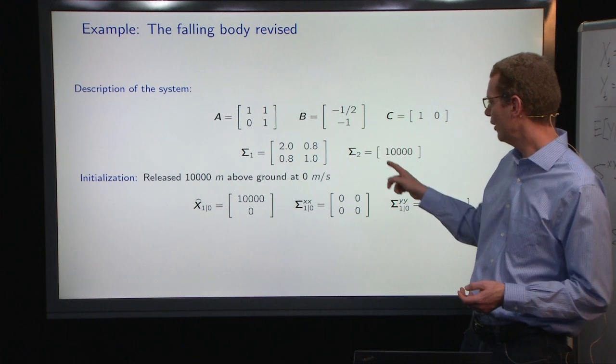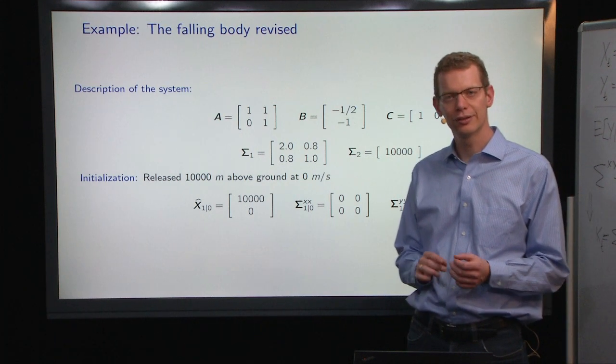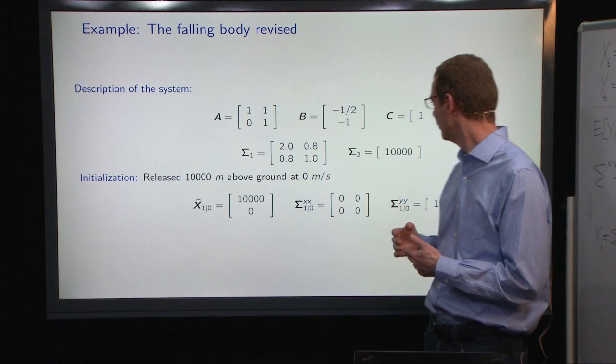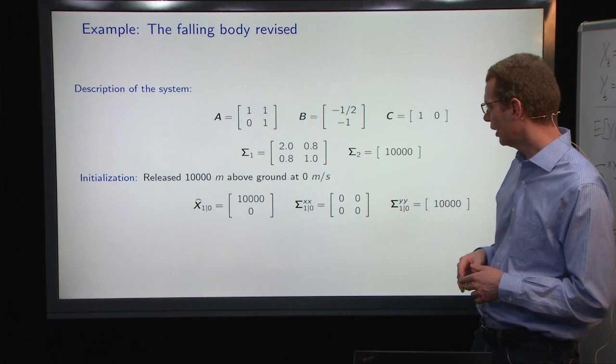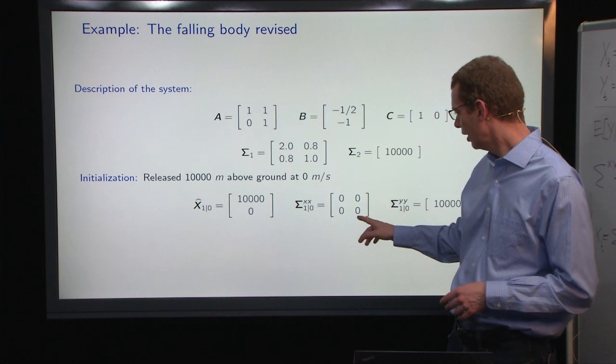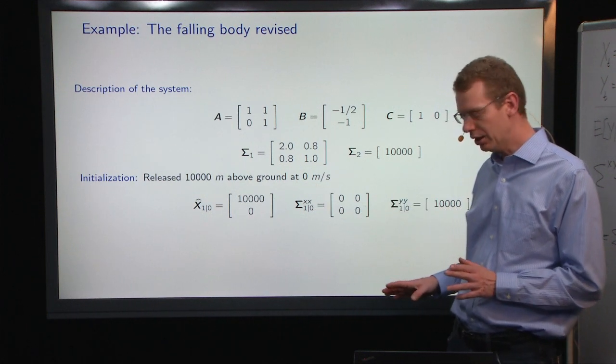A variance of 10,000 means there's a standard error of 100 meters on the altitude measurement. We'll start 10,000 meters above ground with zero velocity, and we're sure that we know exactly where we are.